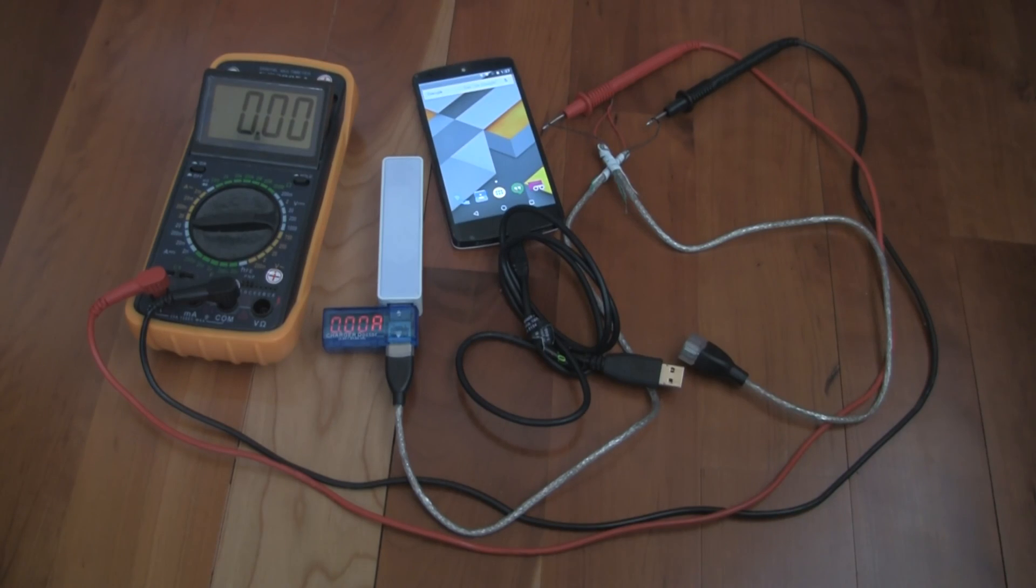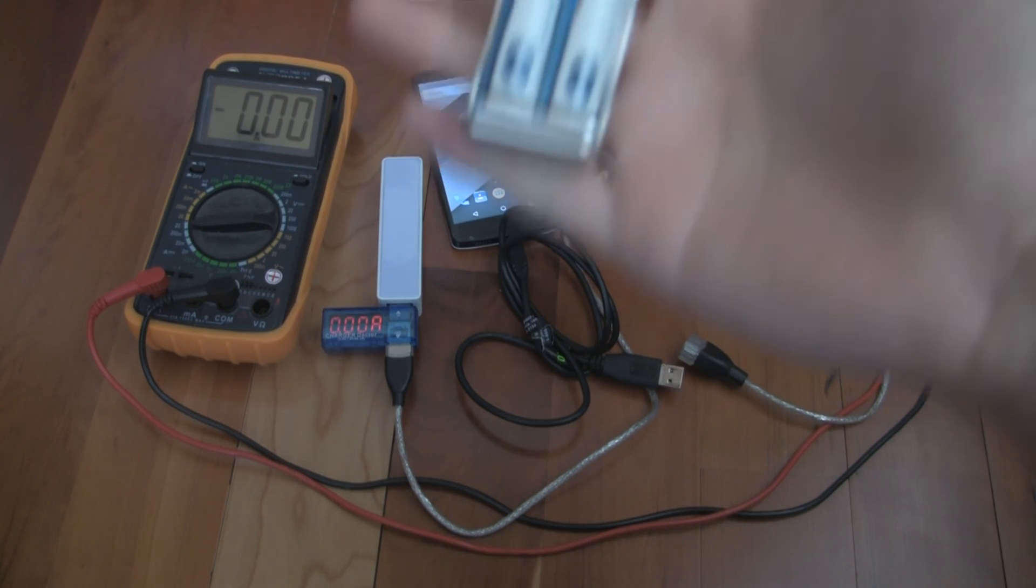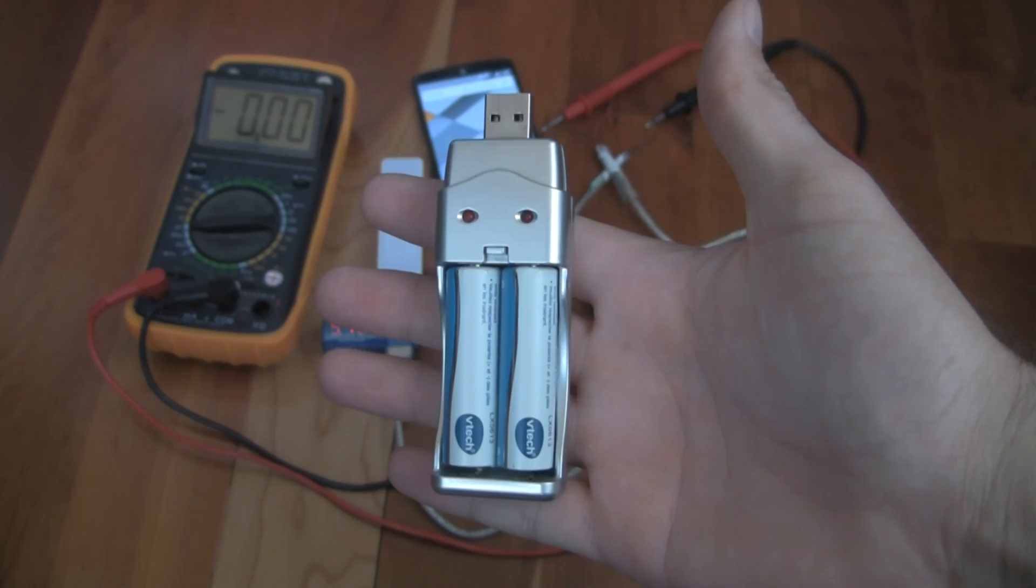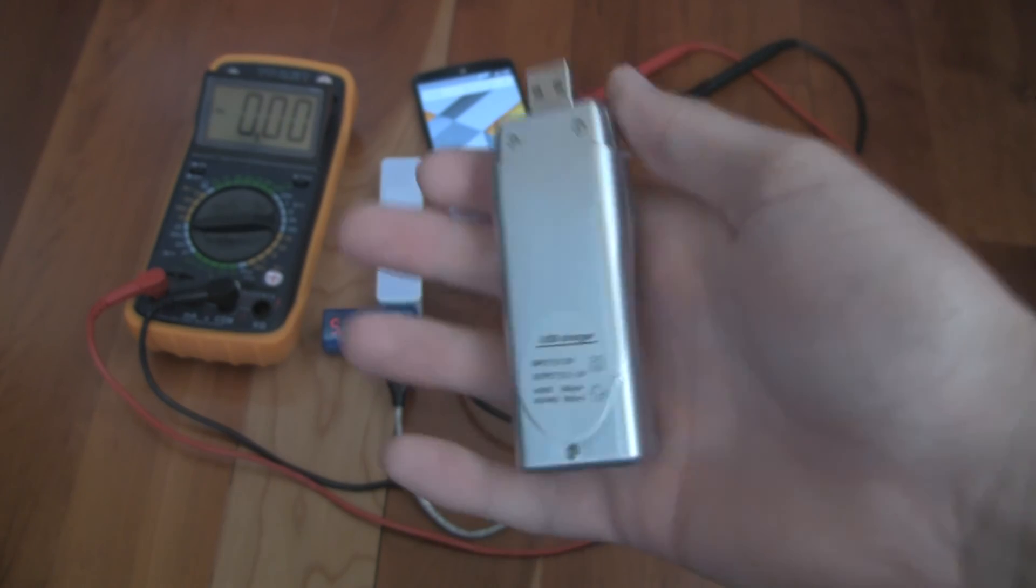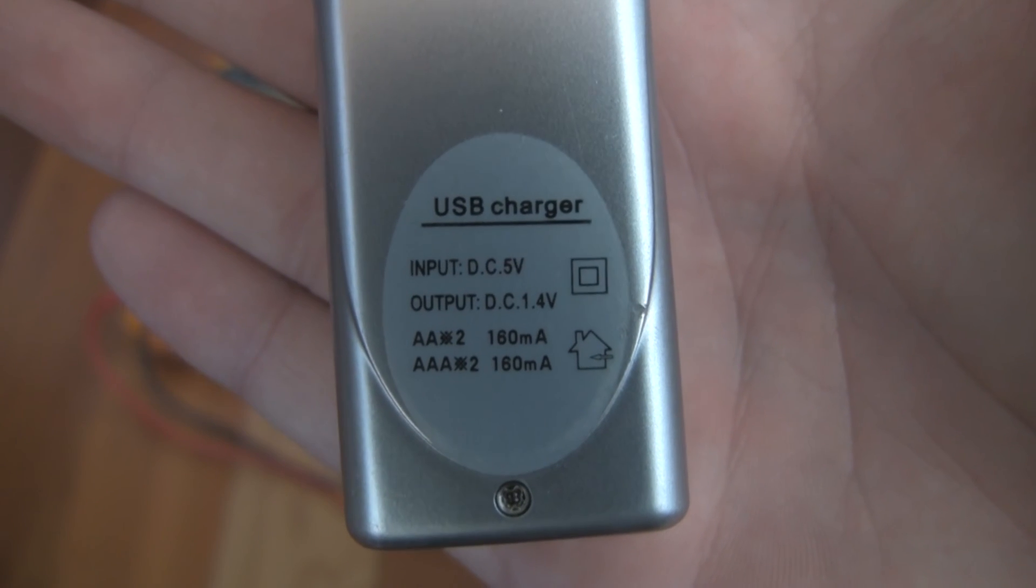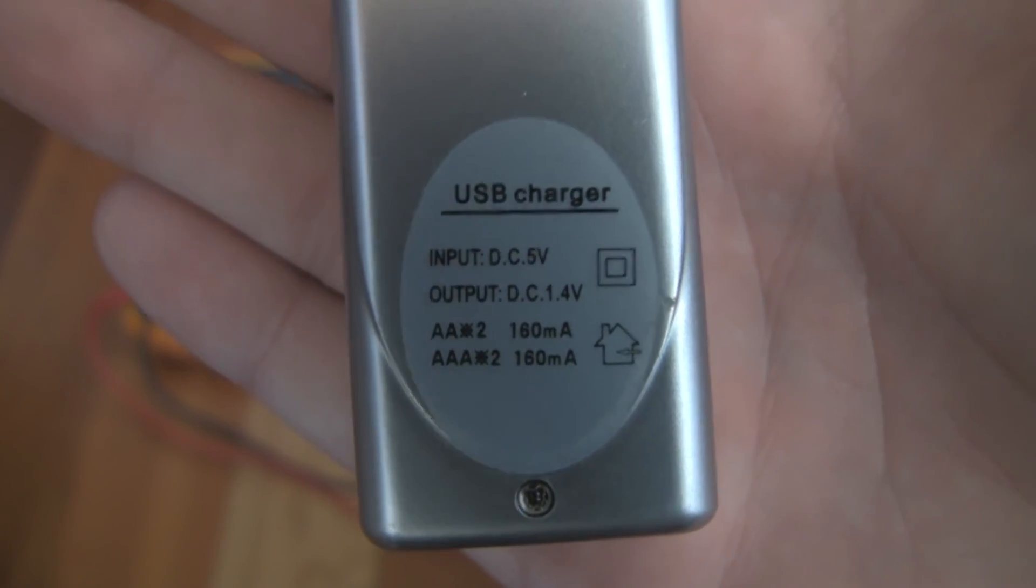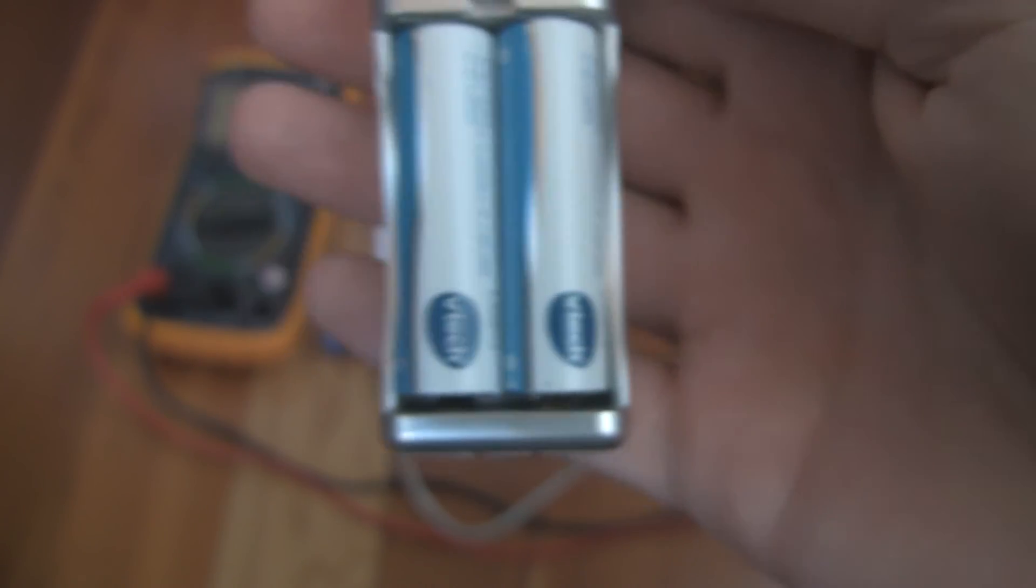So we've seen a USB light and we've seen a phone charging. Let's see how a nickel metal hydride USB charger would work. This particular charger is rated at 0.16 amps or 160 milliamps. Let's see what it does.